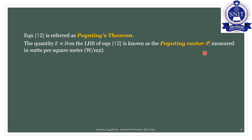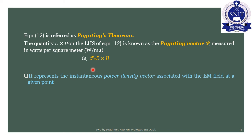The quantity E cross H on the LHS of equation 12 is known as the Poynting vector P, measured in watts per square meter. The Poynting vector P = E cross H represents the instantaneous power density vector associated with the electromagnetic field at a given point.